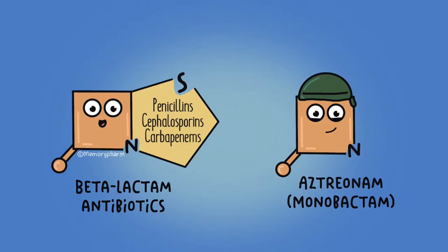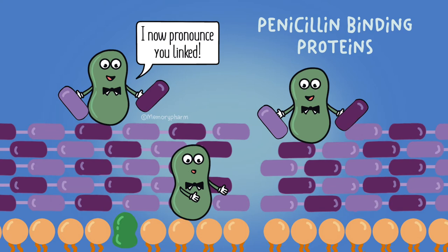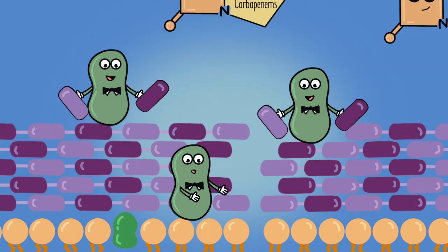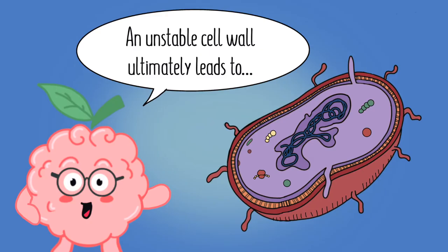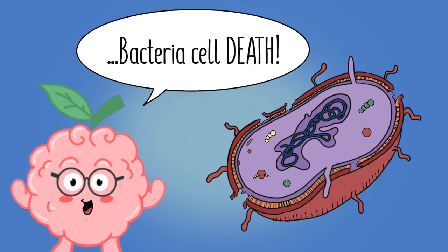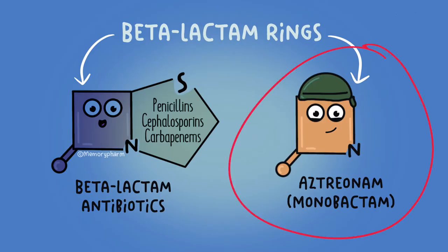Beta-lactam antibiotics like penicillin, cephalosporins, and carbapenems contain something called a beta-lactam ring that irreversibly binds to enzymes on the cell membrane in bacteria called penicillin-binding proteins, or PBPs. This stops the final step in the creation of the peptidoglycan layer of bacteria cell walls, making the cell walls defective and unstable, leading to a series of events that ultimately kills the bacteria. Aztreonam, a monobactam antibiotic, also works similarly to beta-lactams.